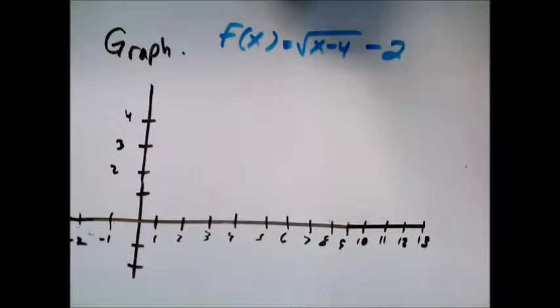Here we want to graph another square root function: square root of x minus 4, and then minus 2 is outside the square root. So for the leftmost point, what's the smallest thing I could put in here?